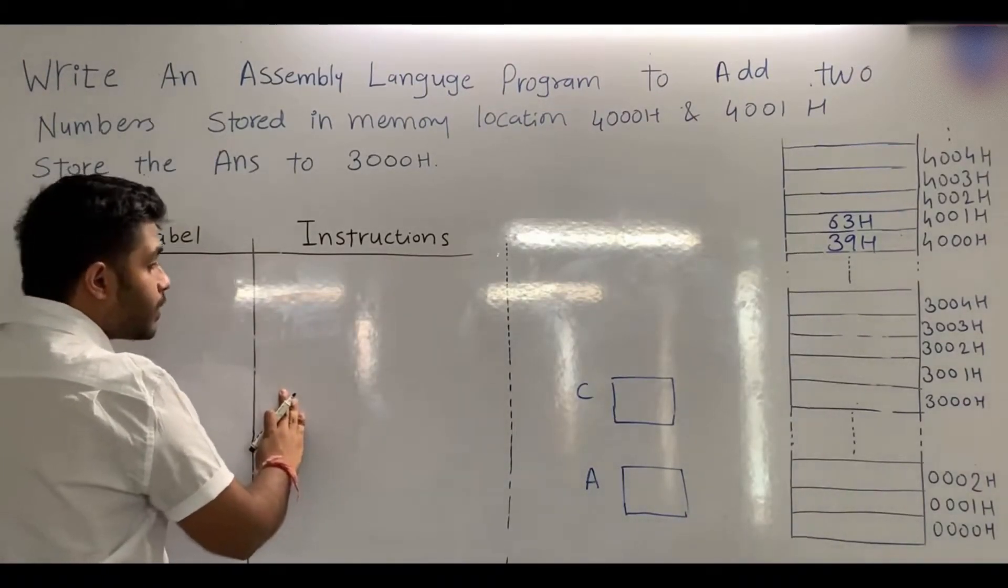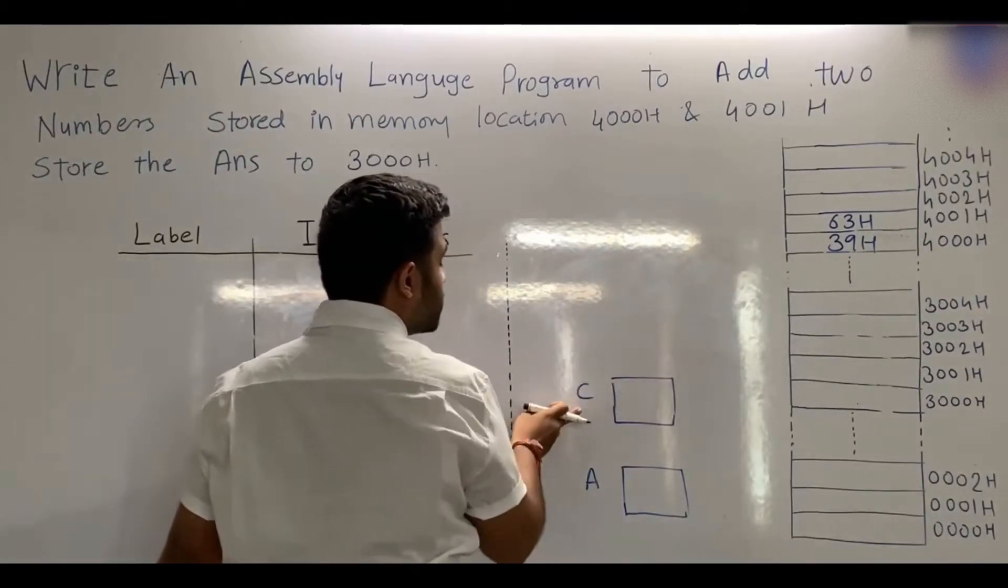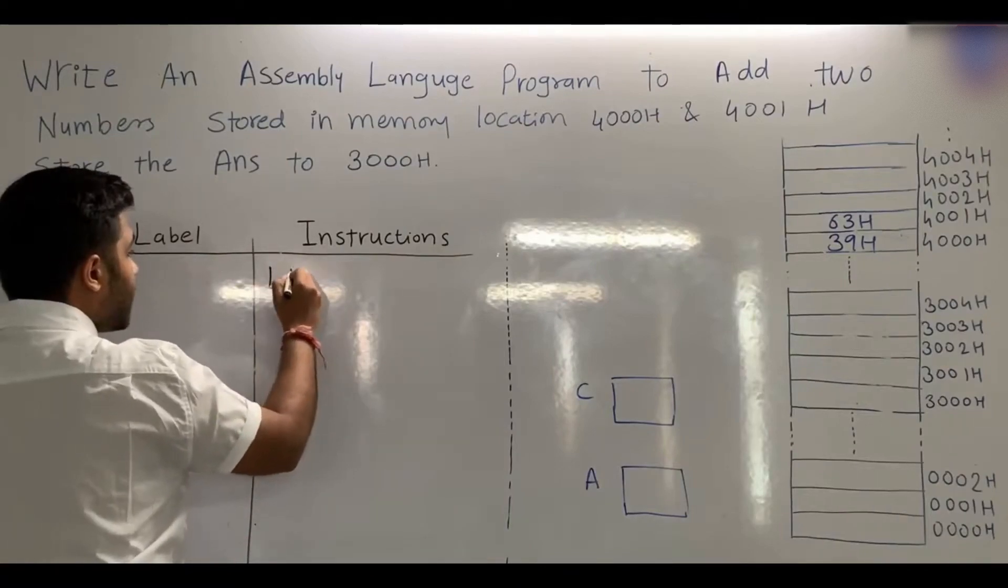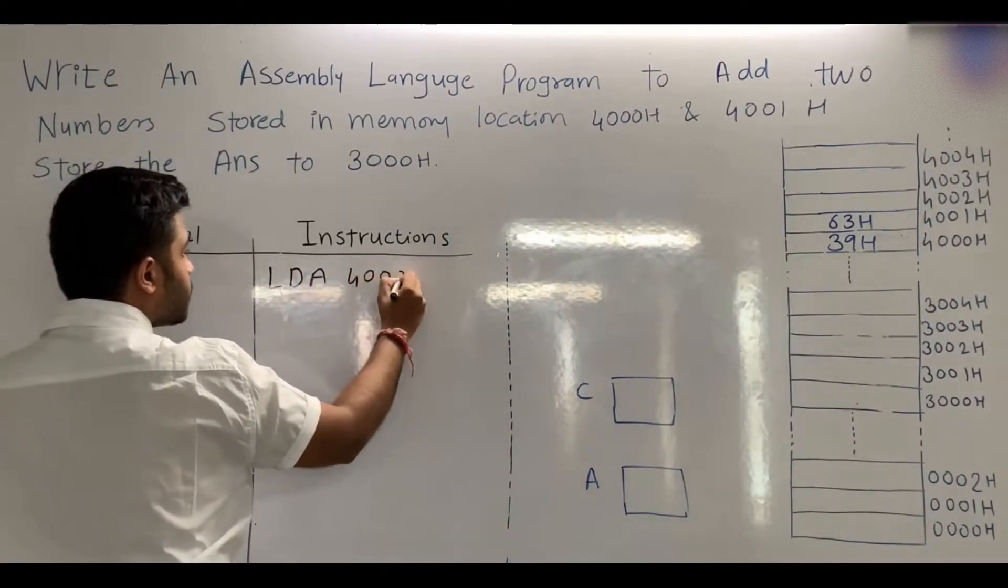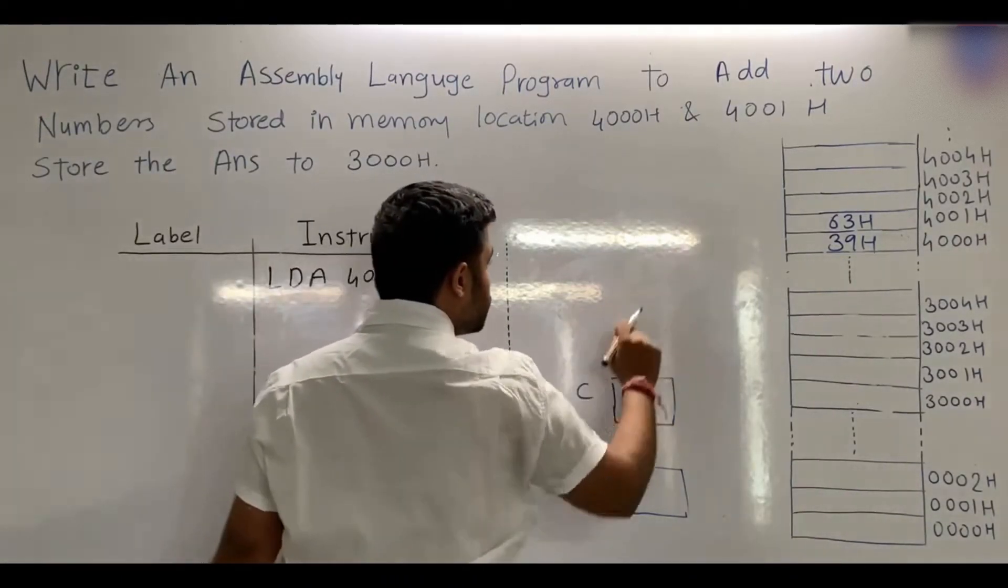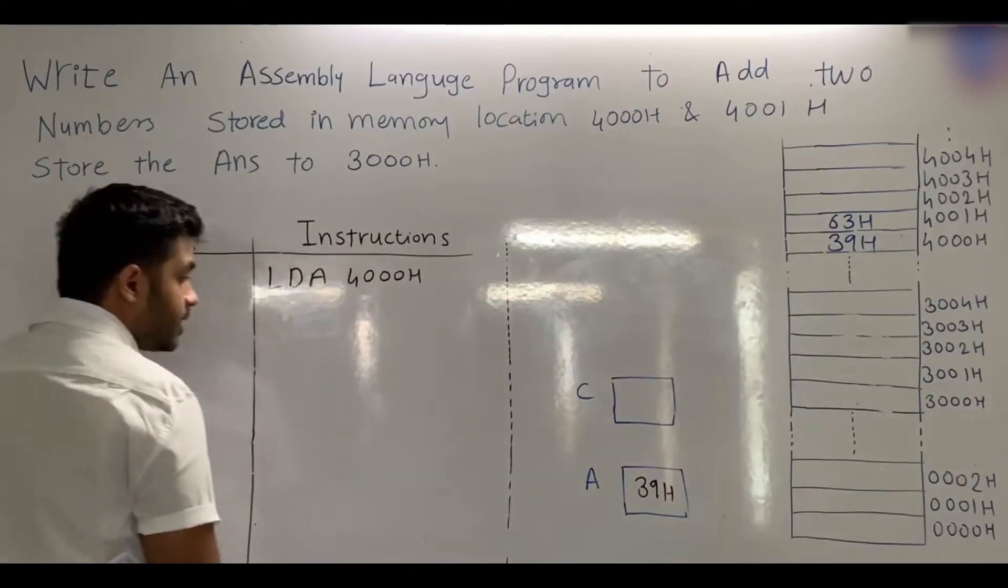First of all, we will transfer the data from 4000H. For that, we will use the instruction LDA 4000H. When we use LDA 4000H, the data will be moved to which register? The accumulator. In the accumulator, we will get 39H.